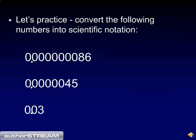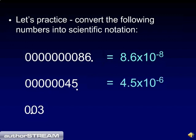Let's practice some more. In order to convert the number 0.000000086 into scientific notation, you must move the decimal point 8 spaces to the right. Therefore, this number becomes 8.6 times 10 to the minus eighth in scientific notation. In order to convert 0.00000045 into scientific notation, you move the decimal point 6 spaces to the right, therefore making the number 4.5 times 10 to the minus sixth.